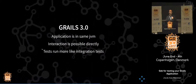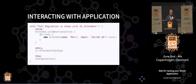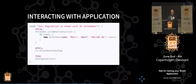In Grails 3, everything runs in the same JVM so interaction is possible directly. The tests run more like integration tests. If we want to have 15 new attendees in our test, we can do Attendee.withNewTransaction and do all our stuff. This also requires us to clean up manually since it will be left for good otherwise. But it will actually have the effect of creating the attendees and making them available for our test data — possible in Grails 3.